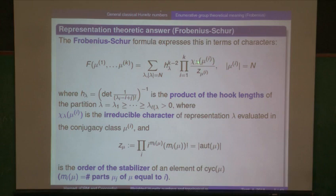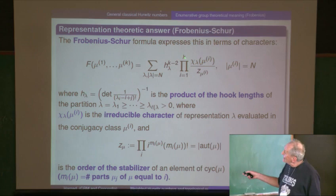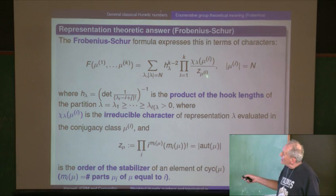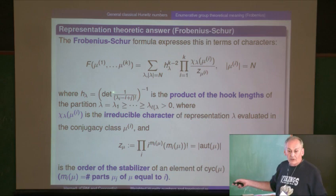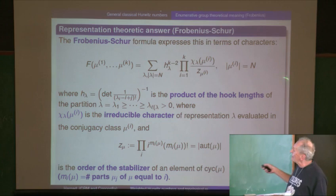You take a product over all conjugacy classes for a fixed representation, divide by a normalization factor — essentially the order of the stabilizer of that element — multiply by another normalization factor which is the hook product length, a combinatorial thing that tells you the dimension of the representation. Basically it's the product of representations over conjugacy classes, summed over all partitions. That's the famous 19th-century formula.